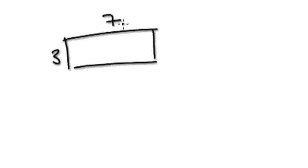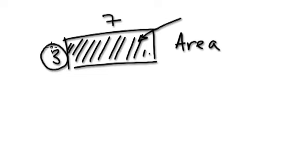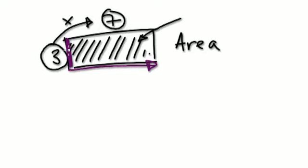Let's say I give you a rectangle — this is 3 and this is 7. The area of this rectangle means the amount of space something takes up, so it's a measure of how much space this thing takes up. To work out the area, you get this number times by this number — the height times by this width. That gives you the measure of the area.